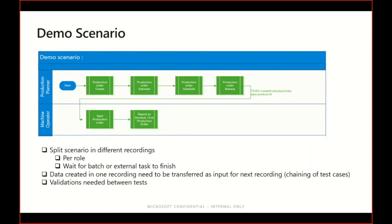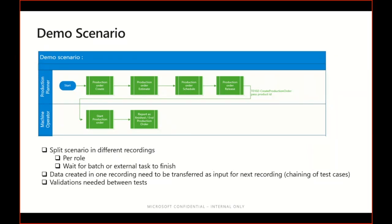Because I'm splitting my scenario into multiple task recordings, I need a way to pass information from one recording to the next. In this example, each time I create a new production order, the number sequence will generate a new number, and I need to pass that number to the second recording so the machine operator can filter on the newly created production order — making sure he starts the right order and reports as finished on the correct one.